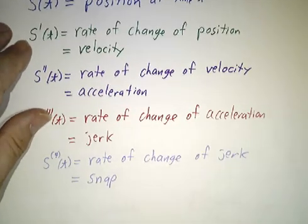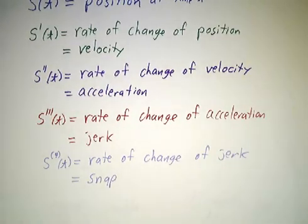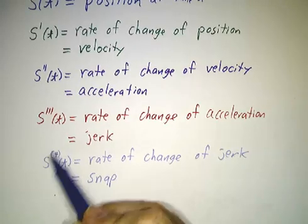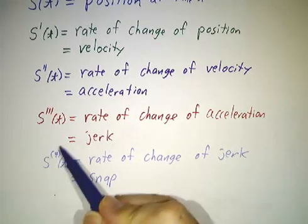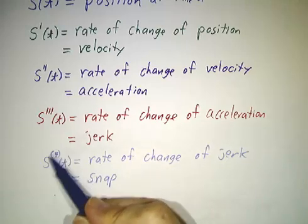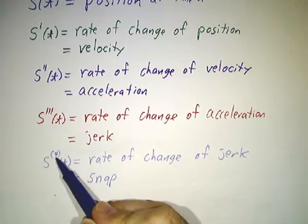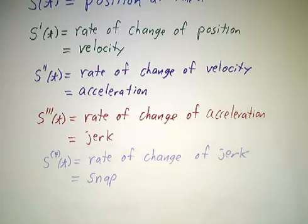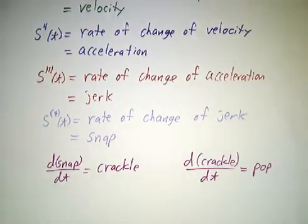The derivative of jerk is called snap. And at this, after a while, you start saying, gee, I don't feel like drawing a whole bunch of primes. So instead of writing s quadruple prime, you just put a 4 in parentheses to indicate that there are 4 primes there. So it's the rate of change of the jerk. The derivative of the snap is the crackle, and the derivative of the crackle is the pop. And yes, those are the real names.